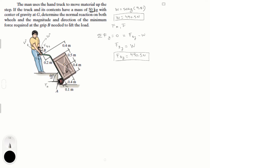Now, assuming clockwise is positive, let's take the sum of moments about A equal to zero. This is going to be a long one, but bear with me. Instead of the usual axis, I'm going to tilt it at the same angle that the hand truck is at, and start right here at A. That should make it much easier for you to see.